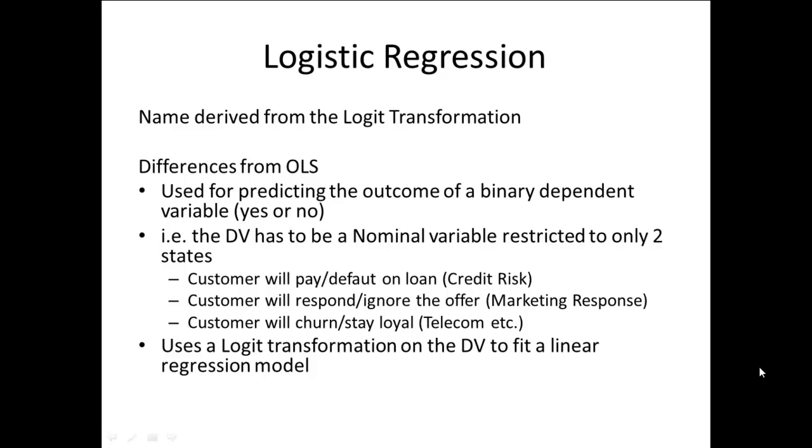In logistic regression, the outcome or the dependent variable is always a binary variable - that is, it can only take two categories or two states: yes/no, on/off, one or zero. An example would be whether a customer will pay or default on a loan. For example, the credit risk of a customer is considered a binary outcome variable when a customer applies for a loan to a bank - could be a home loan or personal loan. The bank wants to predict whether the customer will be able to pay back on the loan or will default.